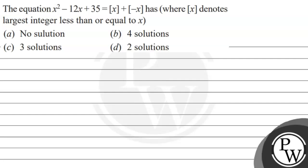Hello, let's see the question. The question says the equation x squared minus 12x plus 35 equals the greatest integer function of x plus the greatest integer function of minus x, where the greatest integer function needs the largest integer less than or equal to x.